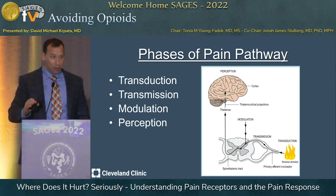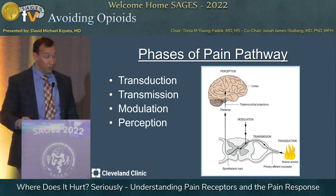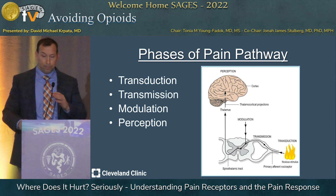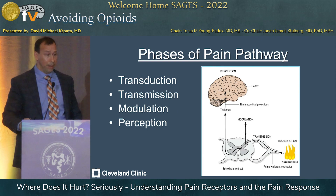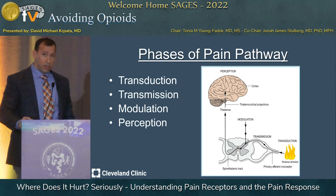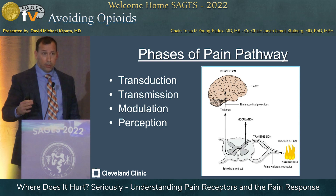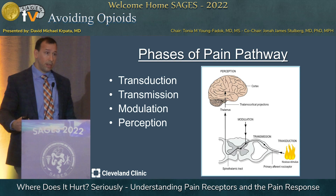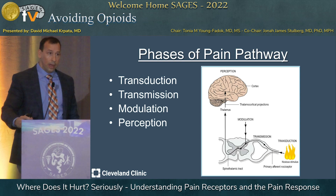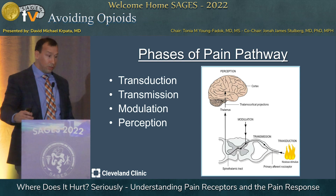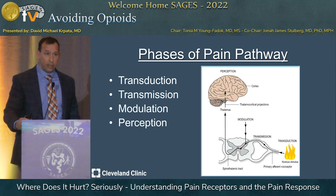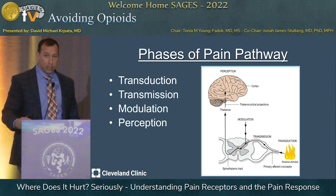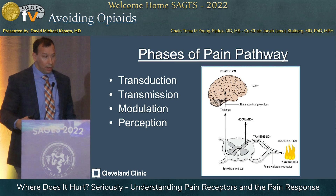If you're talking about the pain pathway, there are four phases: transduction, which is that initial stimulation of the pain receptors; transmission, which is the movement of the action potential down the neuron to the central system; then modulation — and I'm going to focus a lot on modulation today because modulation is actually inhibitory on the system.